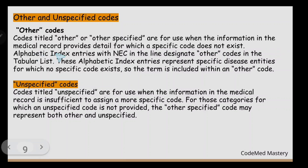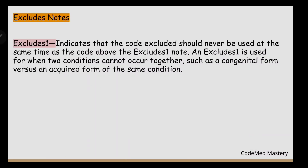Other and unspecified codes: codes titled 'other' or 'other specified' are used when the medical record provides detail for which a specific code does not exist — the documentation provides detail but ICD-10-CM has no specific code for that condition. Unspecified codes are used when information in the medical record is insufficient to assign a more specific code — the medical record simply does not provide enough information.